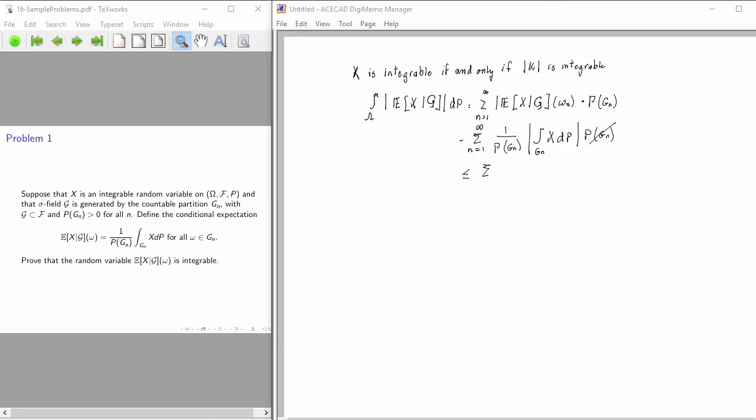This is less than or equal to the sum from n equals 1 to infinity of what I get if I first take the absolute value and then do the Lebesgue integral. Of course, G sub n's form a partition, so that means I'm now integrating over the entire sample space. Or, if you prefer the other notation, I've calculated the expectation of the absolute value of X. That proves the result.